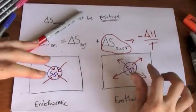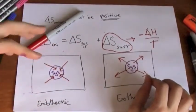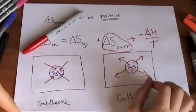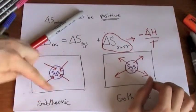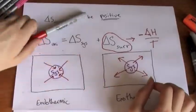With an endothermic process, the enthalpy sign is positive. The entropy of the surroundings are decreasing, so it's going to be a negative change in entropy. So we end up with an equation which looks something like this.